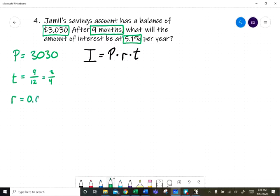Let's put this into our formula for interest. Interest is equal to principle times rate, 0.051, times time, which is 3 over 4.